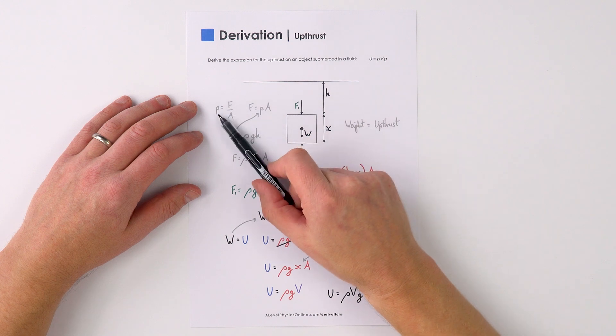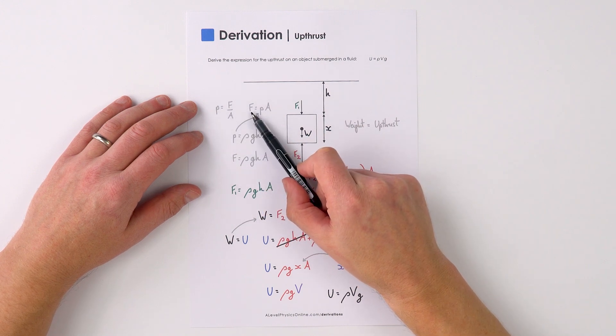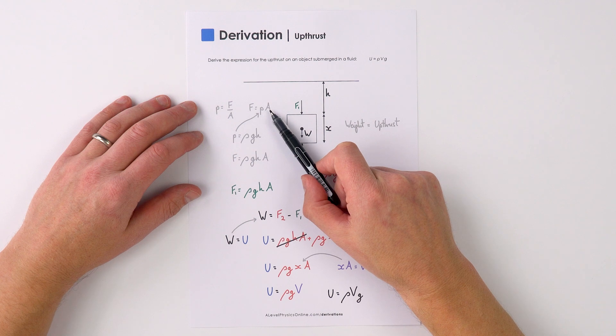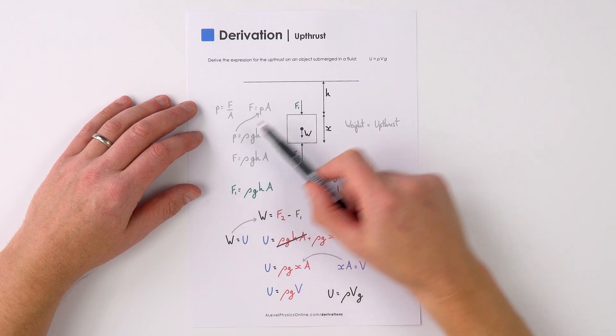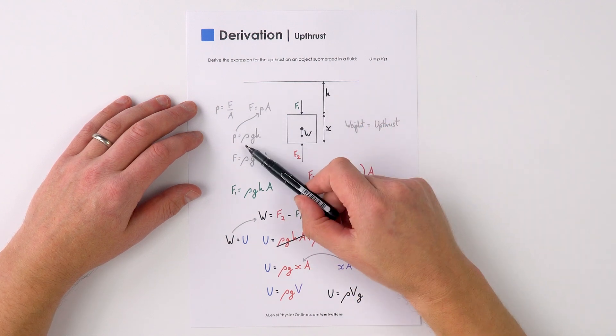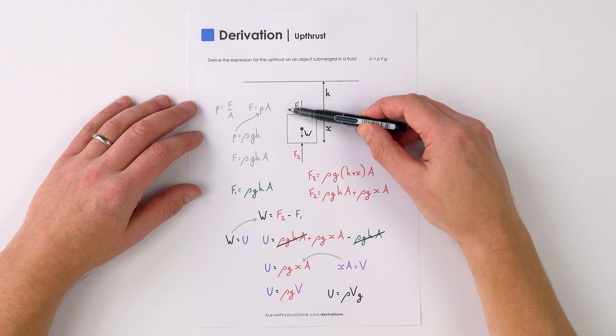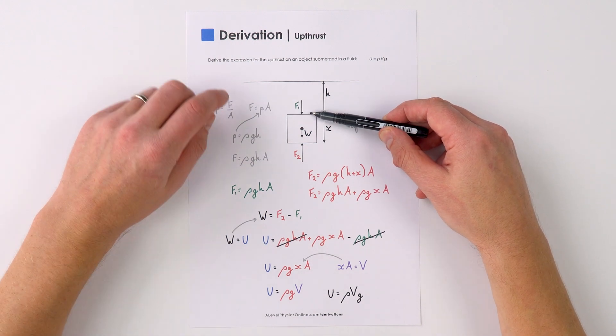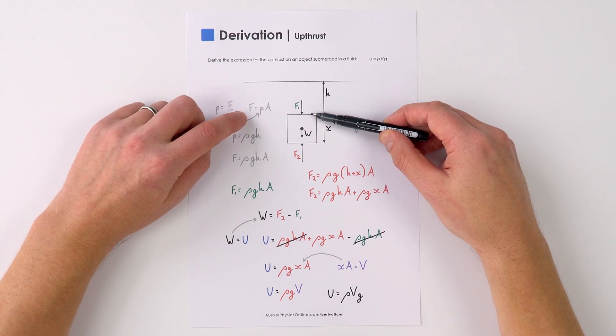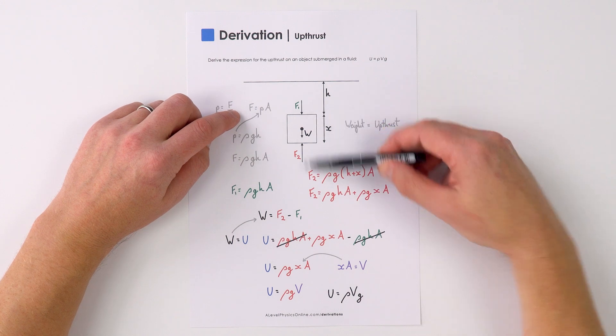Pressure is equal to force divided by area, and therefore force equals pressure times area. The pressure at a depth in this fluid is equal to ρgh at this point, and therefore the force acting on this face of the object is equal to the pressure ρgh multiplied by the area, and that's important.